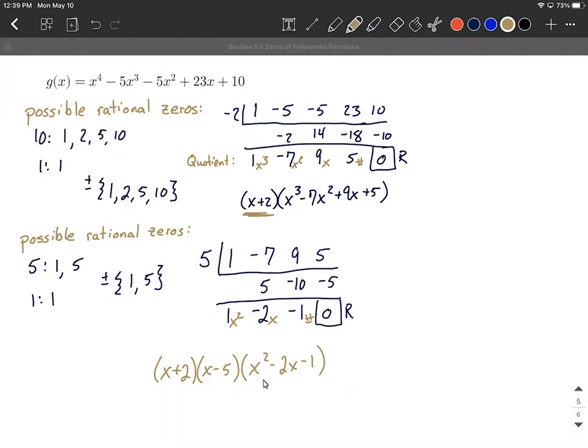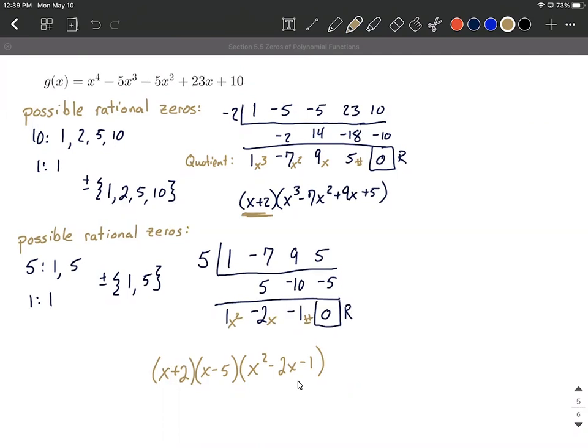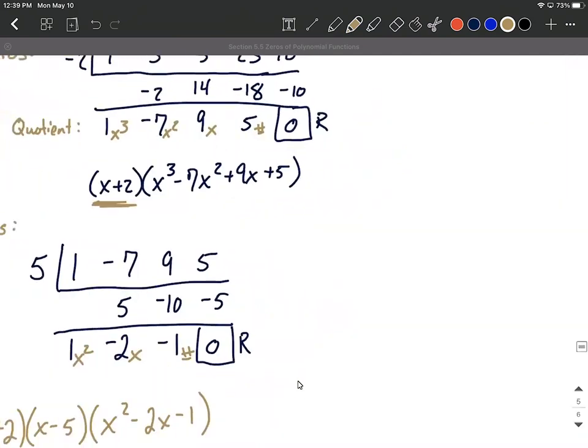All right, in looking at this, we have x squared minus 2x minus 1. I don't think this will factor nicely for us. We are down to a quadratic, so we've got some experience in factoring quadratics, but this one's not going to factor nicely for us.